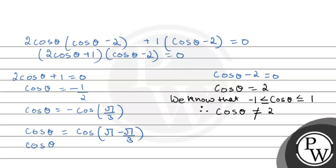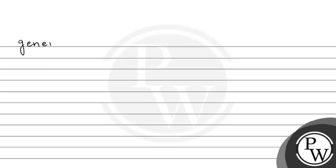Therefore, cos theta equals cos(2pi by 3), which gives the general solution: theta equals 2n pi plus or minus 2pi by 3, where n is an integer.